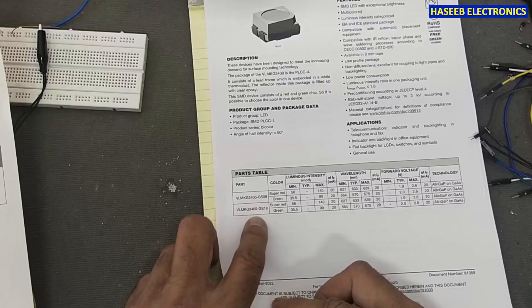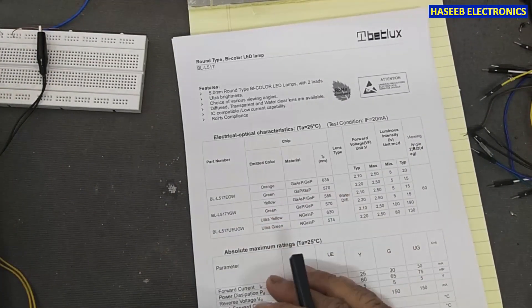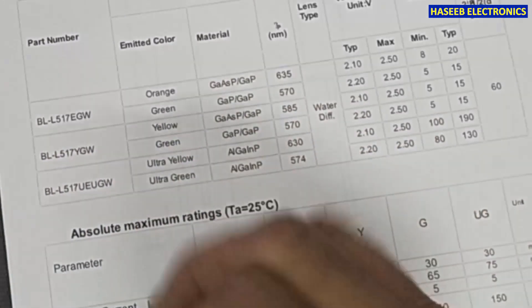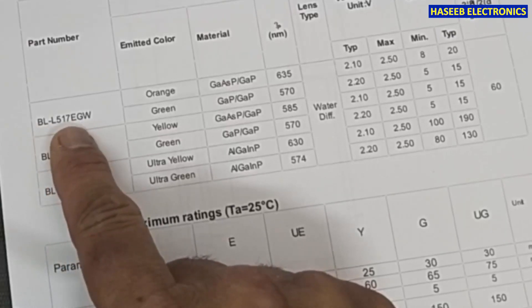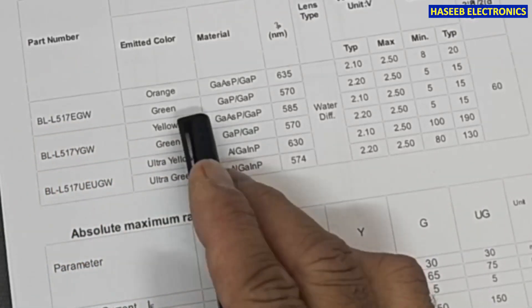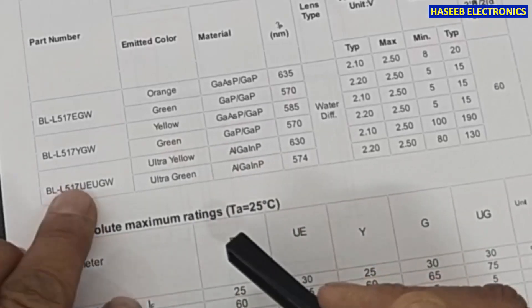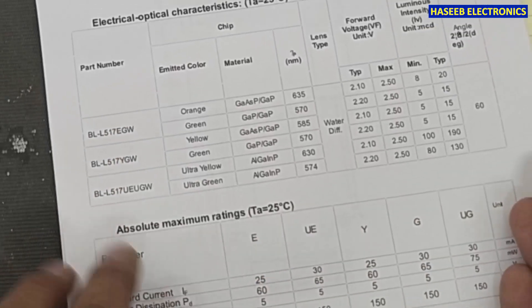GS08 and GS18, BL517, it is also two-color LED but it has different colors: orange-green. This part number is BL-L517EGW. And yellow-green, ultra yellow, ultra green, these different part numbers. I will mention these part numbers in the video description.